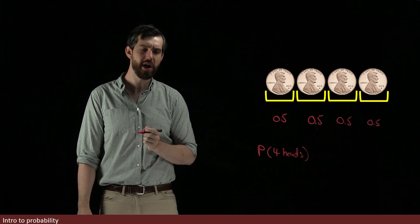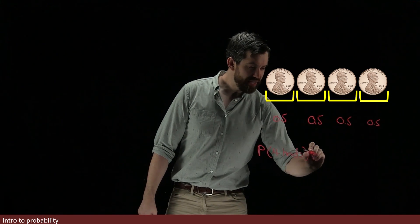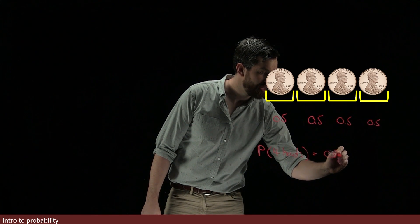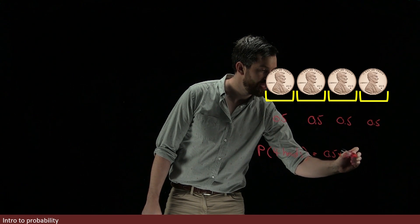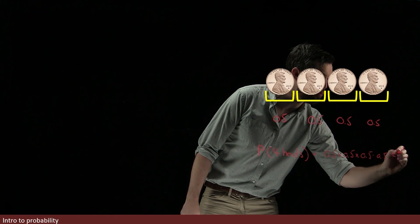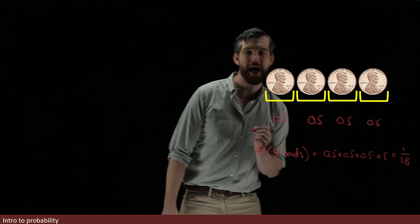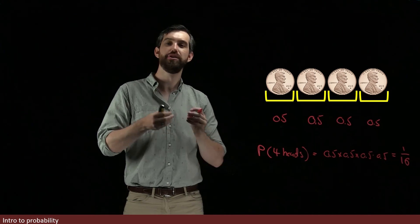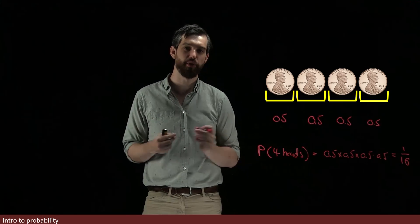That this is going to be equal to 0.5 times 0.5 times 0.5 times 0.5, which is the same thing as 1 divided by 16. Or in other words, a half times a half times a half times a half. 2 to the power of 4 is 16, hence the 1/16th.